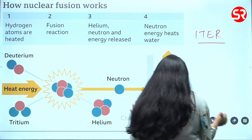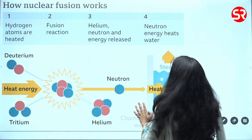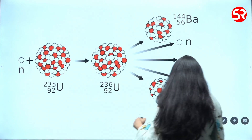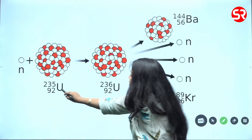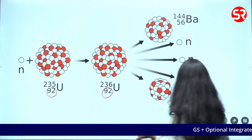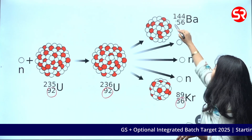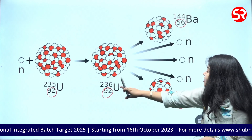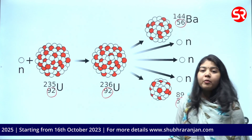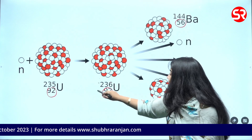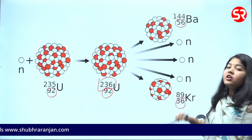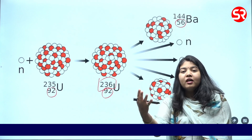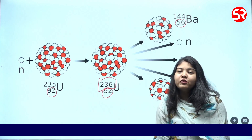I want to draw your attention that in nuclear fission also, which we studied earlier, the atomic number always remains the same — if you add 56 to 36 it is also 92. There is never a change in the atomic number. It is the atomic mass which gets reduced, meaning neutrons are lost, which is then responsible for the production of energy.